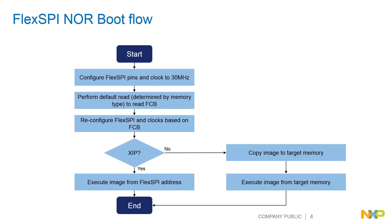Then the ROM is going to look at the IVT pointers. If the IVT pointer points to a different target memory, the ROM knows it's not an XIP boot and will copy the image to the target memory as needed. But for the XIP boot there's no copying — everything's left exactly where it is and the ROM will just go to executing the image directly from its FlexSPI location.